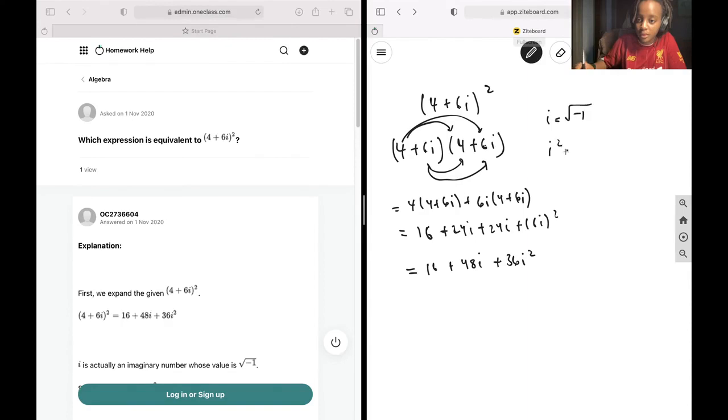Let's put that in. 16 plus 48i minus 36. That becomes 48i minus 20. That's our final answer.